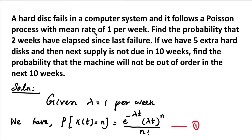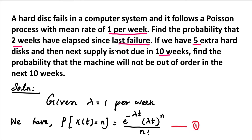Students, in the Poisson process, here is one important problem. A hard disk fails in a computer system and it follows a Poisson process with a mean rate of 1 per week. Find the probability that 2 weeks have elapsed since the last failure. If we have 5 extra hard disks and the next supply is not due in 10 weeks, find the probability that the machine will not be out of order in the next 10 weeks.